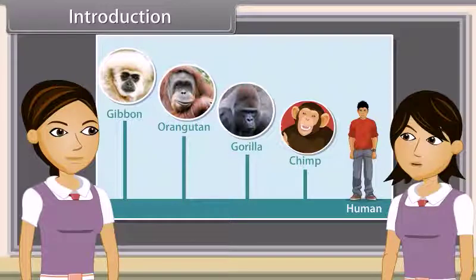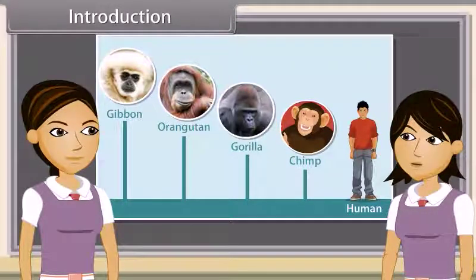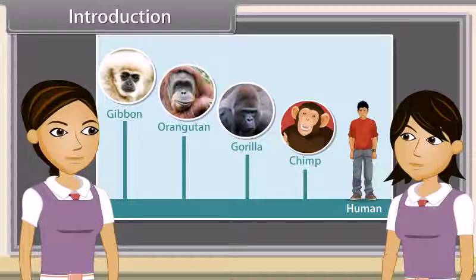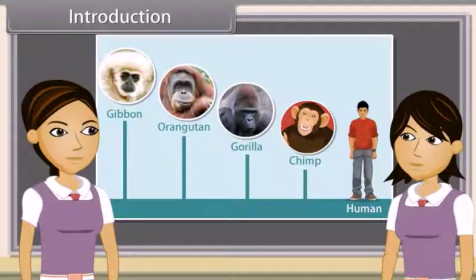Okay, do you want to say that this chart shows that human beings had chimpanzees as their ancestors, chimpanzees' ancestors were gorillas and so on? Yes, let me explain to you in detail how various life forms were evolved on the earth, one after the other.